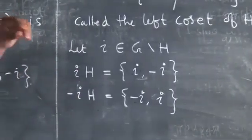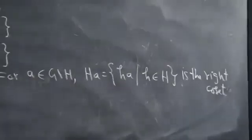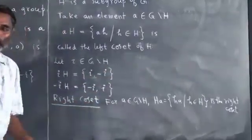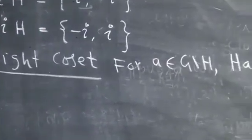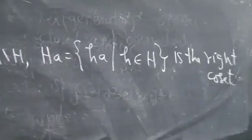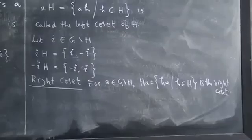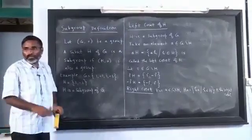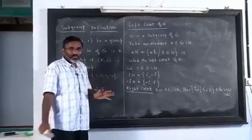The right coset is defined as Ha — H multiplied by a from the right. In general, left and right cosets need not be the same. But in this particular example they are the same because this is an abelian group, so multiplying from the left is the same as multiplying from the right. Is a coset itself a subgroup? No, because in general there is no identity element in a coset. So a coset is not a subgroup, but it is a set.